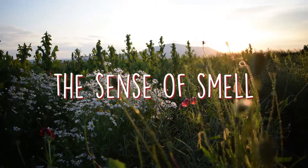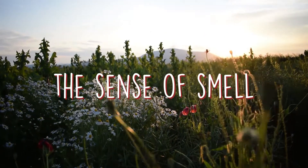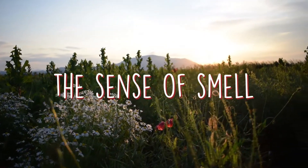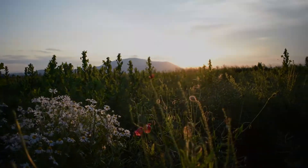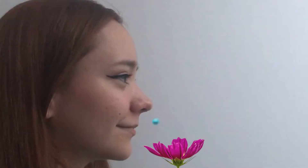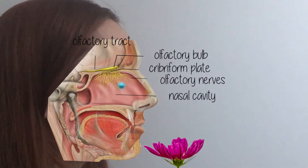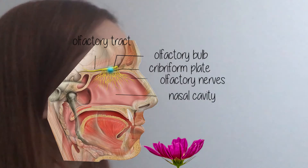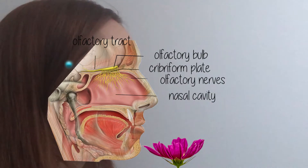The sense of smell, also known as olfaction, is produced when odorant molecules enter the nasal cavity, dissolve in the mucous lining, and reach the olfactory epithelium, where the olfactory receptor cells act as transducers, converting the information into electrical signals to send to the brain.